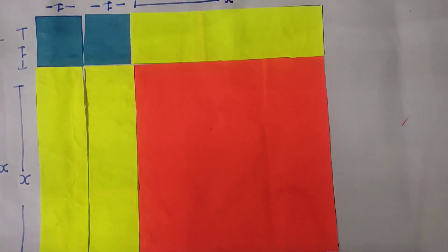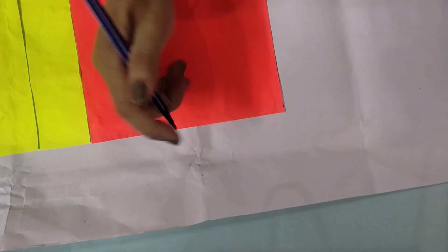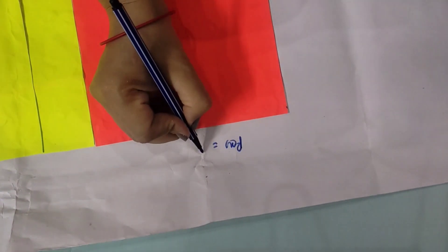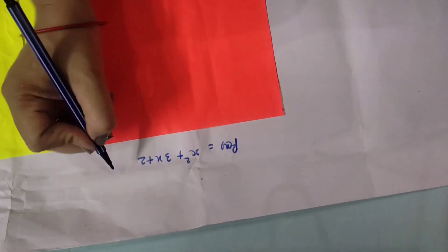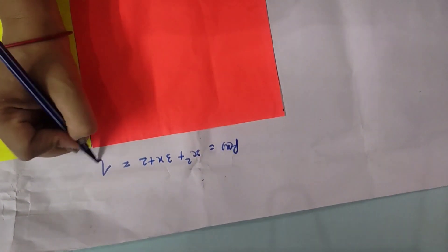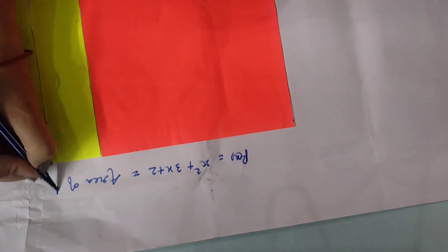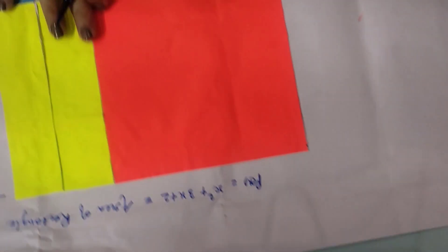So students, we got from the polynomial Px into this big rectangle. In other words, we can say that Px equals x squared plus 3x plus 2, which is equal to the area of the big rectangle.